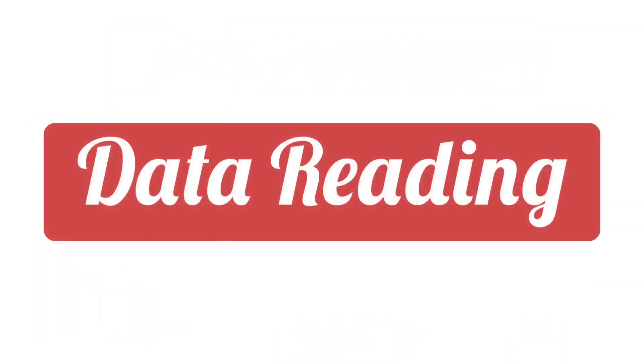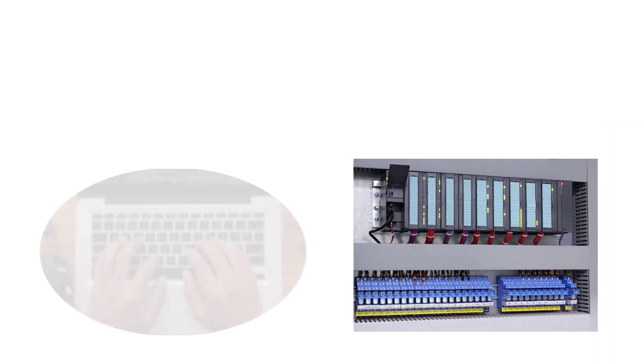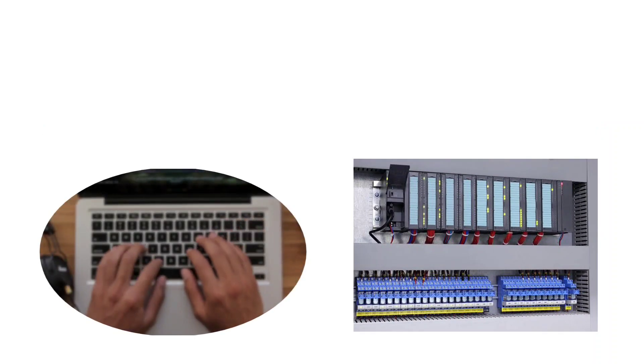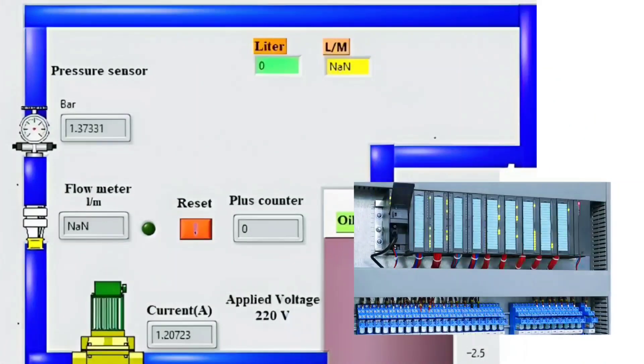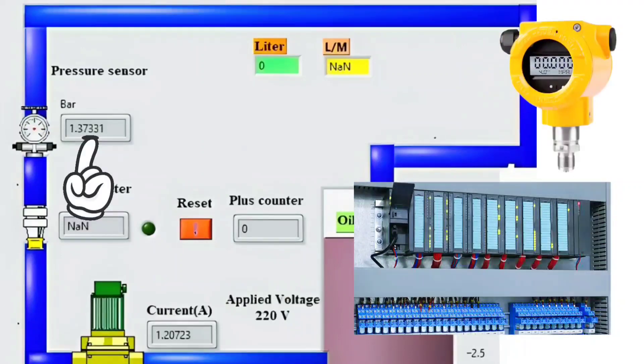Next step is data reading. By PLC programming, read the analog signals coming from the pressure transmitter or any other transmitter. This will provide the actual reading of pressure in the PLC, which you can use in your control logic.